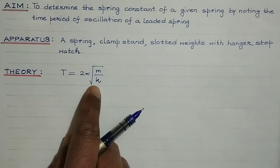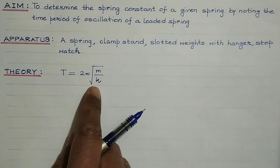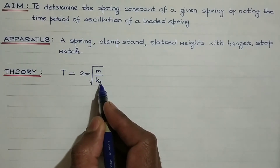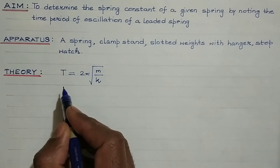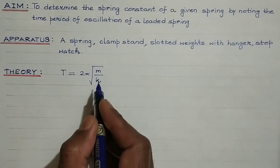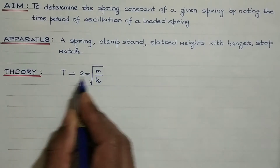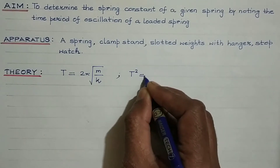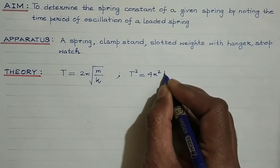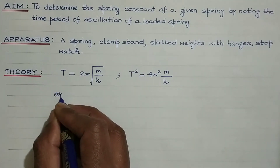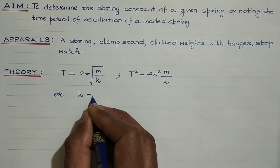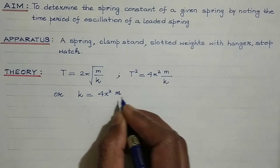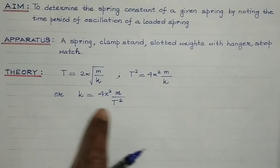We have already proved this in the theoretical section — I will share the link in the description. Here m is the mass, k is the spring constant, and T is the time period. Squaring both sides, T squared equals 4π² times m divided by k, so the spring constant is given by k equals 4π²m divided by T squared. This is the working formula.